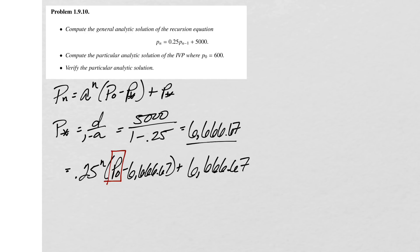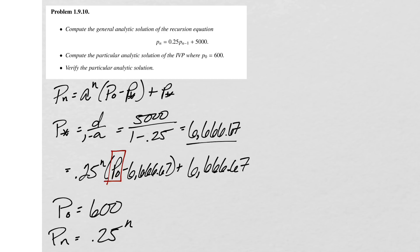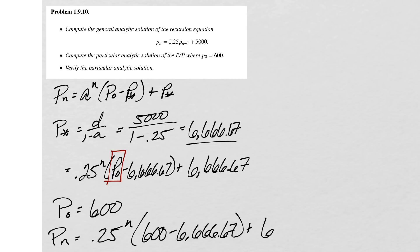The next step says to compute the particular analytic solution of the initial value problem for p0 = 600. So now adding in p0 = 600, all we have to do is write p_n = 0.25 raised to the n, times (600 minus 6,666.67), plus 6,666.67. That is our particular analytic solution.